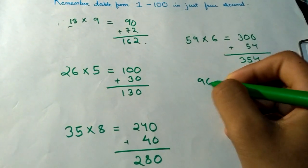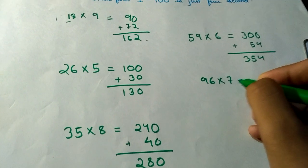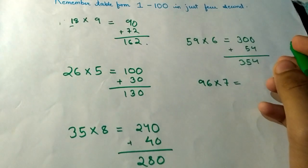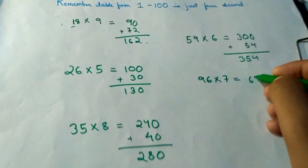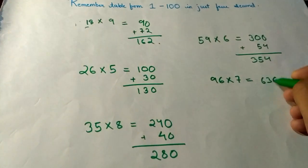Such as 96 × 7. You can calculate any number which is between 1 to 100. So 9 × 7 = 63, I will add another zero here.